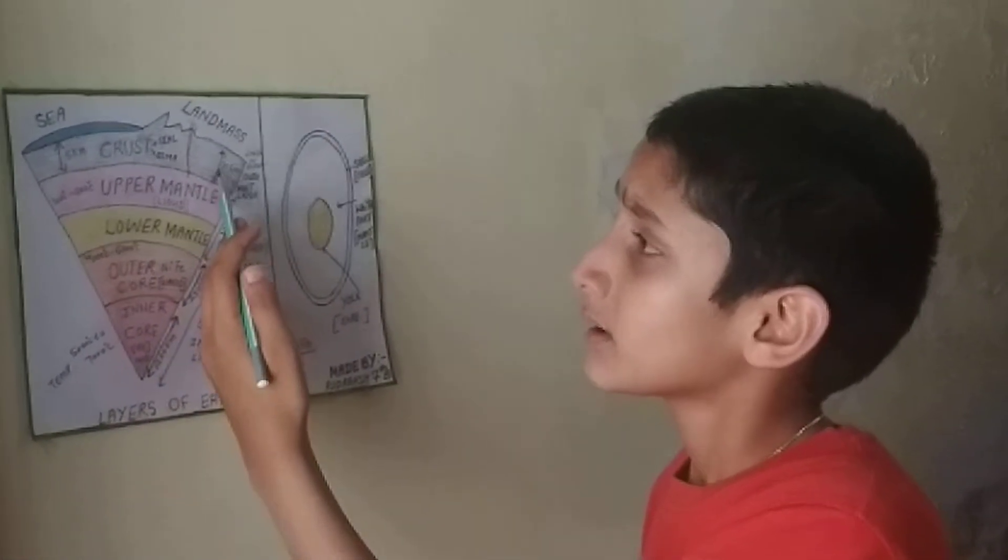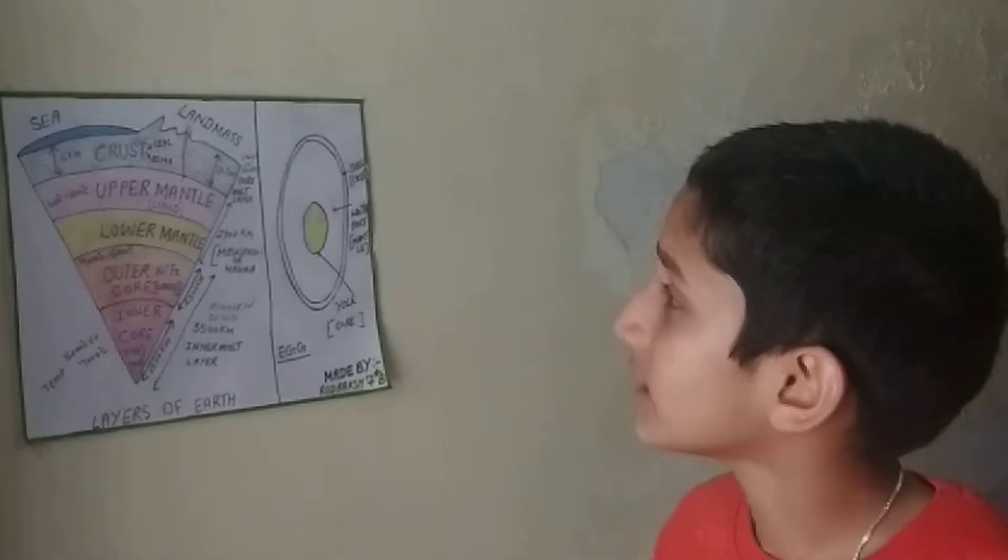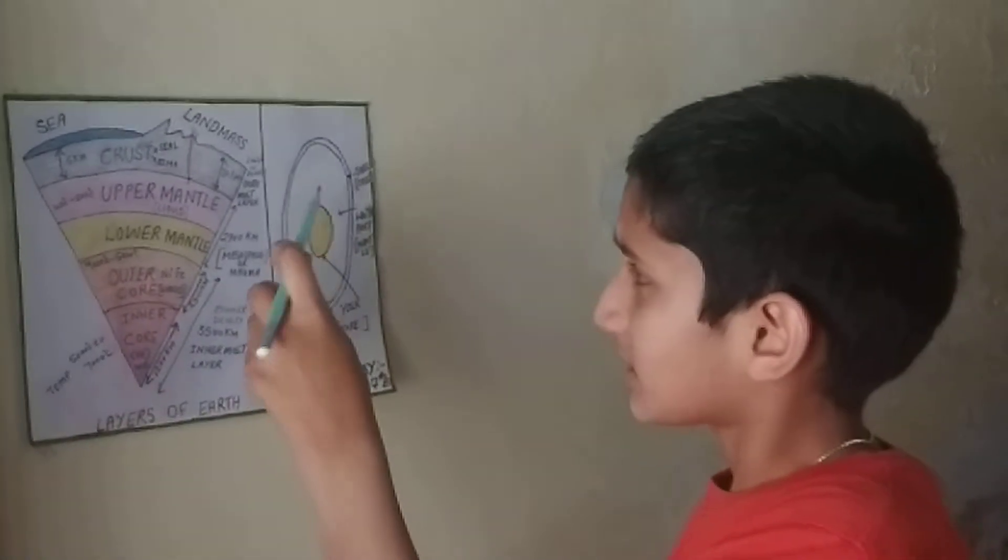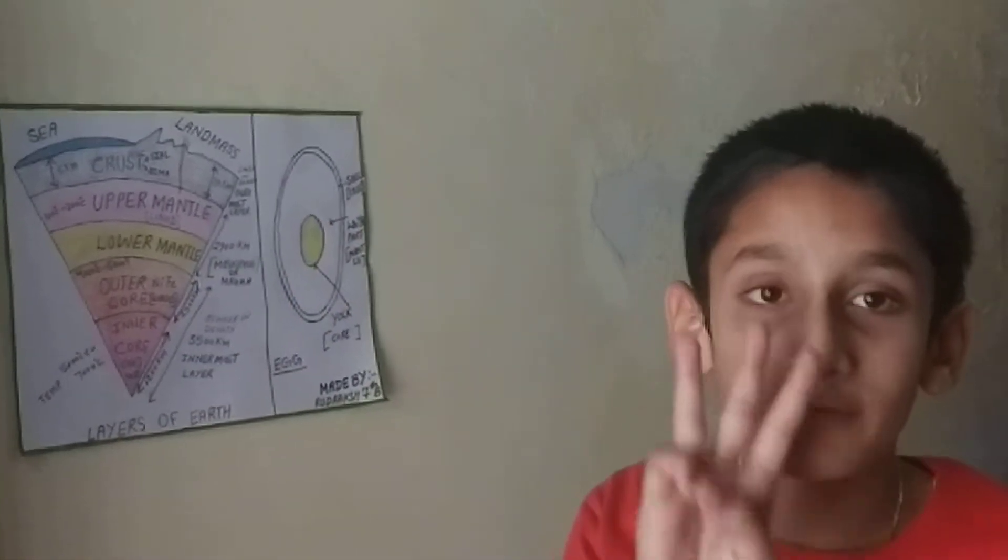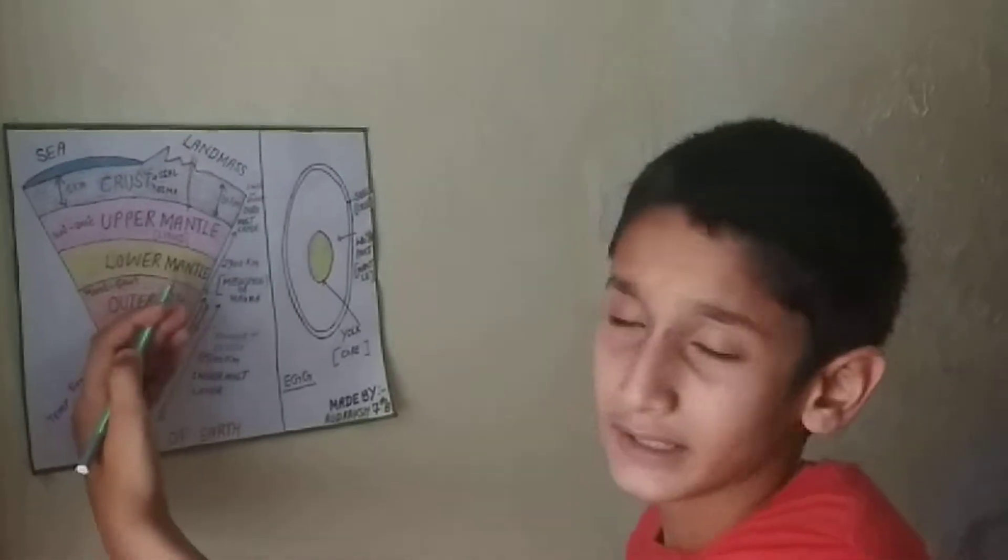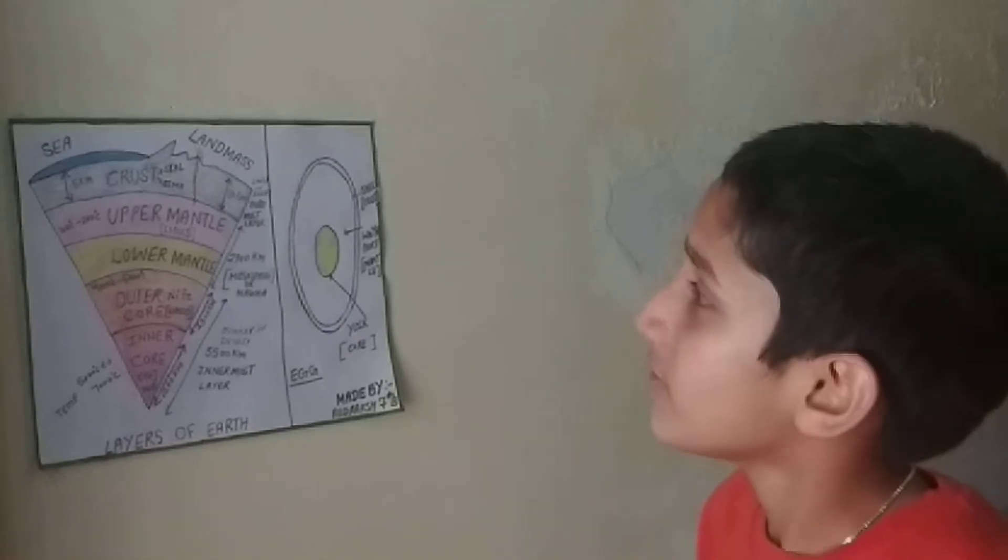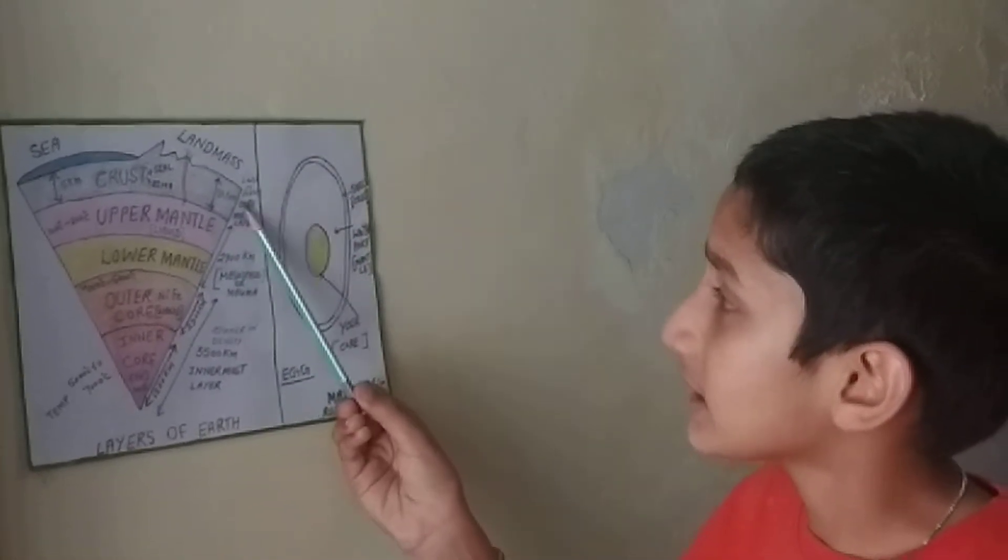The topmost layer of the earth is the crust. It is also the thinnest layer of the earth and is low in density. It is made up of two thicknesses: sea and landmass. The distance from the sea to the upper mantle is 5 km, whereas the distance from the landmass to the upper mantle is 30 km.